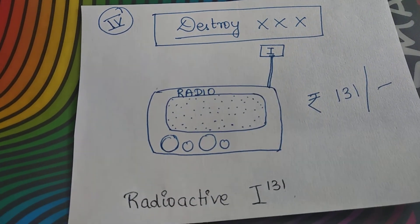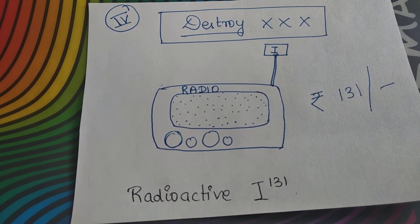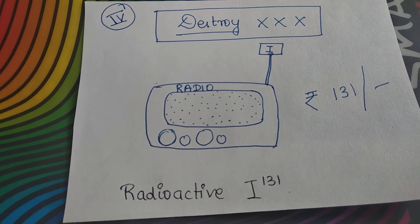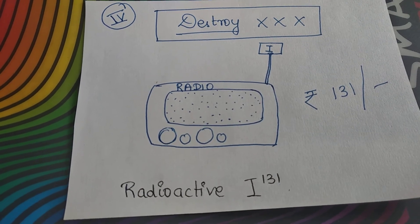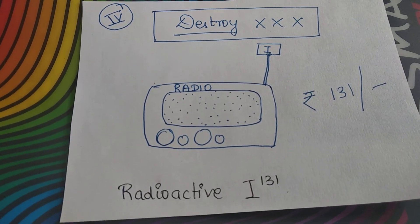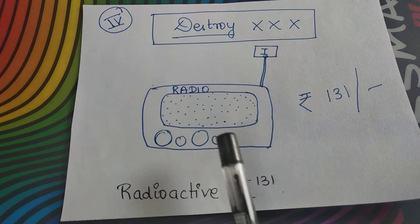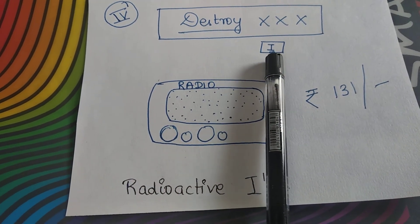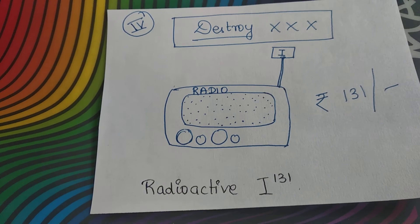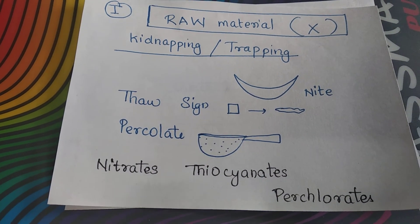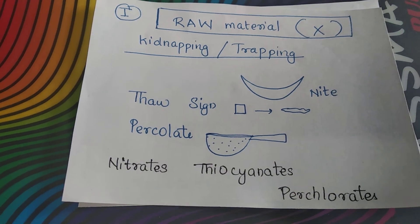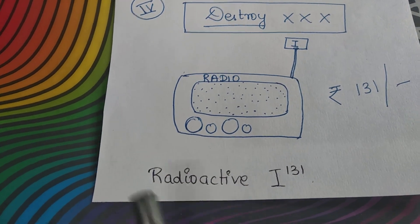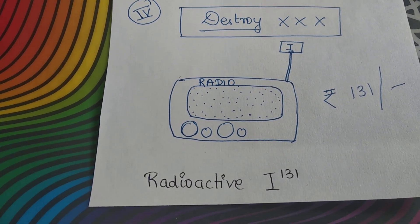Lastly, even if everything fails, we can destroy the thyroid tissue itself. If we are not able to stop the synthesis of the hormone, we destroy the thyroid tissue. We use a radio bought for 31 rupees that catches the frequency of iodine — because in the first stage the raw material was iodine. So we destroy the thyroid tissue using radioactive iodine with the power of 131, that is I-131.